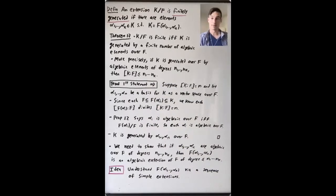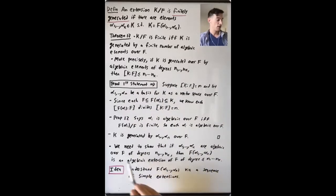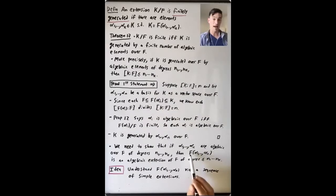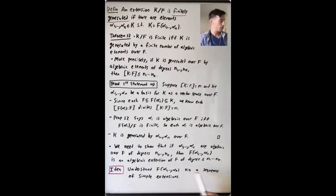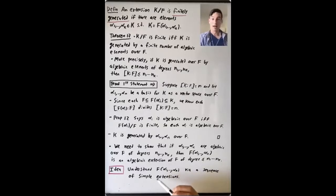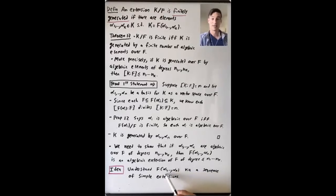What remains to prove Theorem 17 is: if α₁ through αₖ are algebraic over f of degrees n₁ through nₖ, then the field generated by α₁ through αₖ over f is an algebraic extension of f of degree at most the product of these degrees. The big idea is to understand this field generated over f by α₁ through αₖ as a sequence of simple extensions, adjoining one new element at a time, because we know much more about simple extensions than about extensions generated by finite sets of size larger than one.